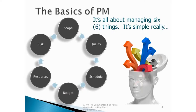As you look at it, really project management comes down to six things: the ability to manage scope, quality, schedule, budget or cost, resources, and project risk.